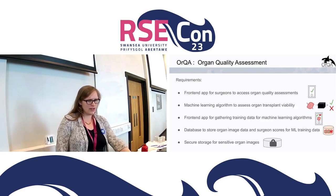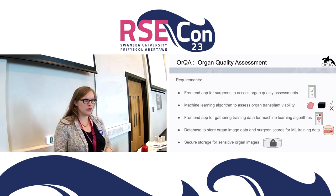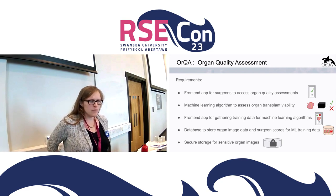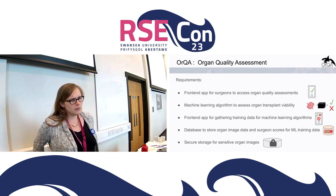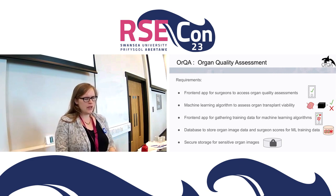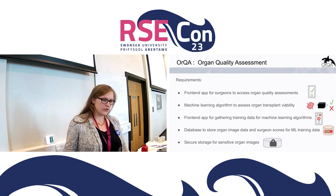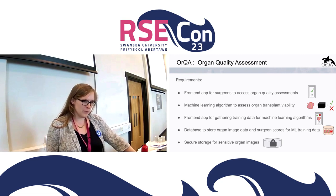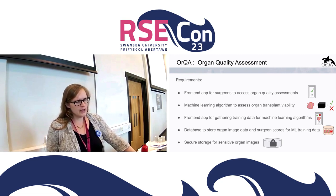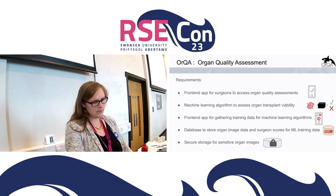To break it down to requirements, what we're trying to create is a front-end application for surgeons that will allow them to access organ quality assessments. Under the hood, we're going to want a machine learning algorithm to assess organ transplant viability. To get an accurate machine learning algorithm, we've been developing a front-end application to gather training data — feedback from clinicians evaluating existing images of organs as to whether they would go ahead with a transplant. We need a database to store the organ image data and surgeon scores, and importantly, secure storage for the sensitive organ images, since we have a lot of restrictions from the NHS on how we store and use it.